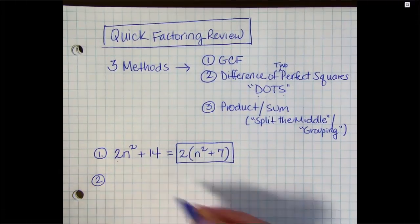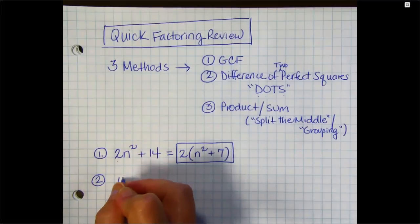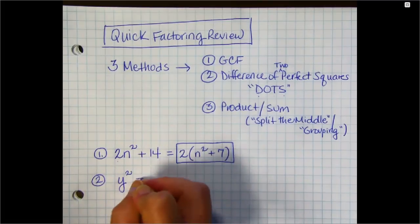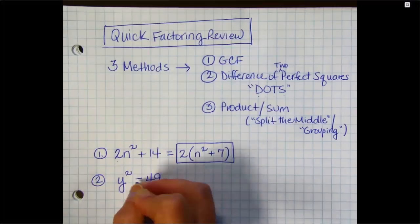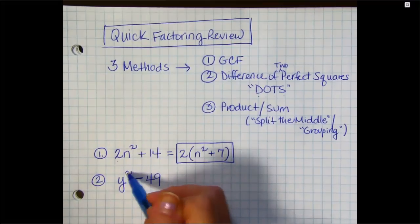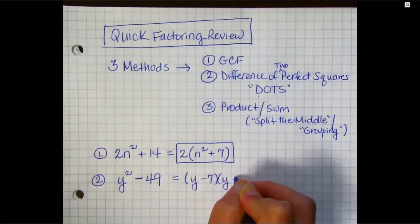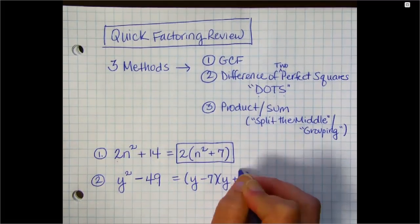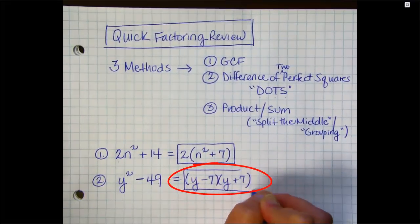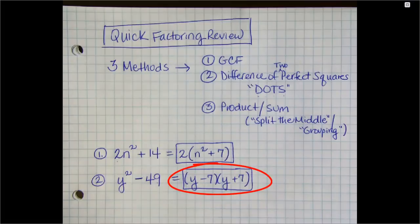The second example, if you're asked to factor something like y squared minus 49, that's a two-termed problem and both of them are perfect squares. They're separated by subtraction, which is a difference. So you square root each piece and get y minus 7, y plus 7. That order of multiplication doesn't matter, so it doesn't matter what order your factors are in.